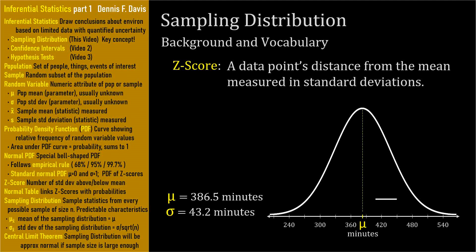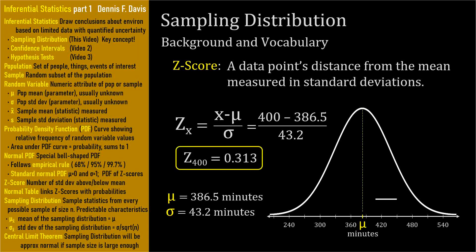Here's the z-score formula: if x represents a particular random variable value, then the z-score is x minus the population mean mu, all divided by the population standard deviation sigma. You need to know this formula. Let's find the z-score of a battery that lasted 400 minutes: 400 minutes minus the mean 386.5 minutes equals 13.5 minutes, divided by the standard deviation of 43.2 minutes, which yields a z-score of 0.313. The numerator and denominator have the same units — minutes divided by minutes — so the z-score is a unitless measure, just a number of standard deviations.